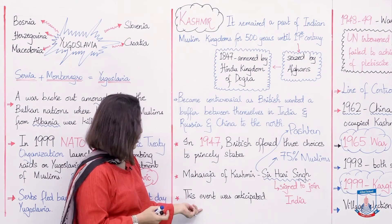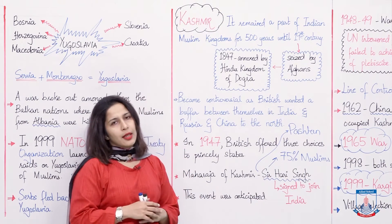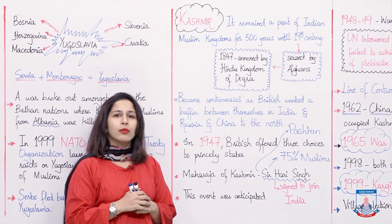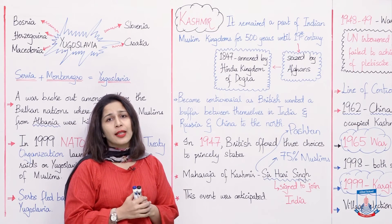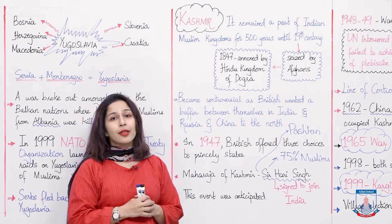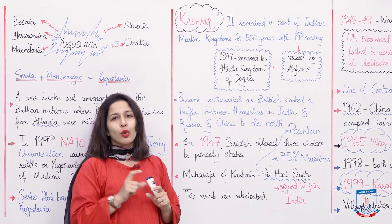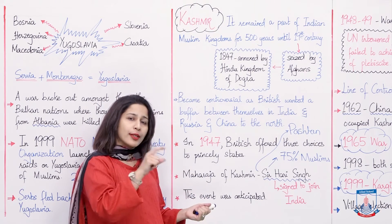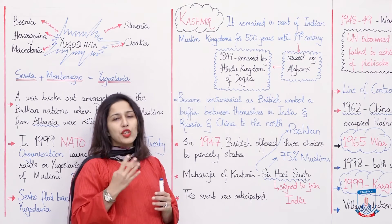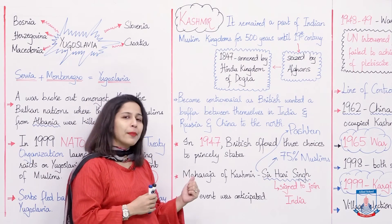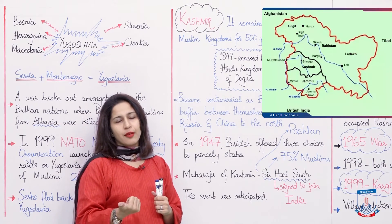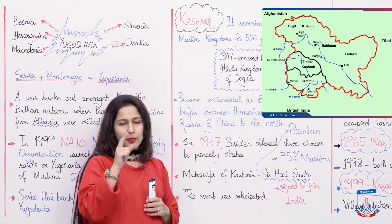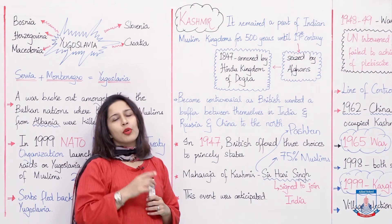So under the pressure of these two factors, Hari Singh signed to join India. When he signed to join India, this event was anticipated. The British or Indian subcontinent people had anticipated this event. It was believed that there was no need to do this. Gurdaspur, which was a region of Muslims, was given to India. If you look on the map, there are five rivers of Pakistan — Ravi, Satlaj, Beas, Chenab, Jhelum — they all originate from Kashmir and flow towards Pakistan.